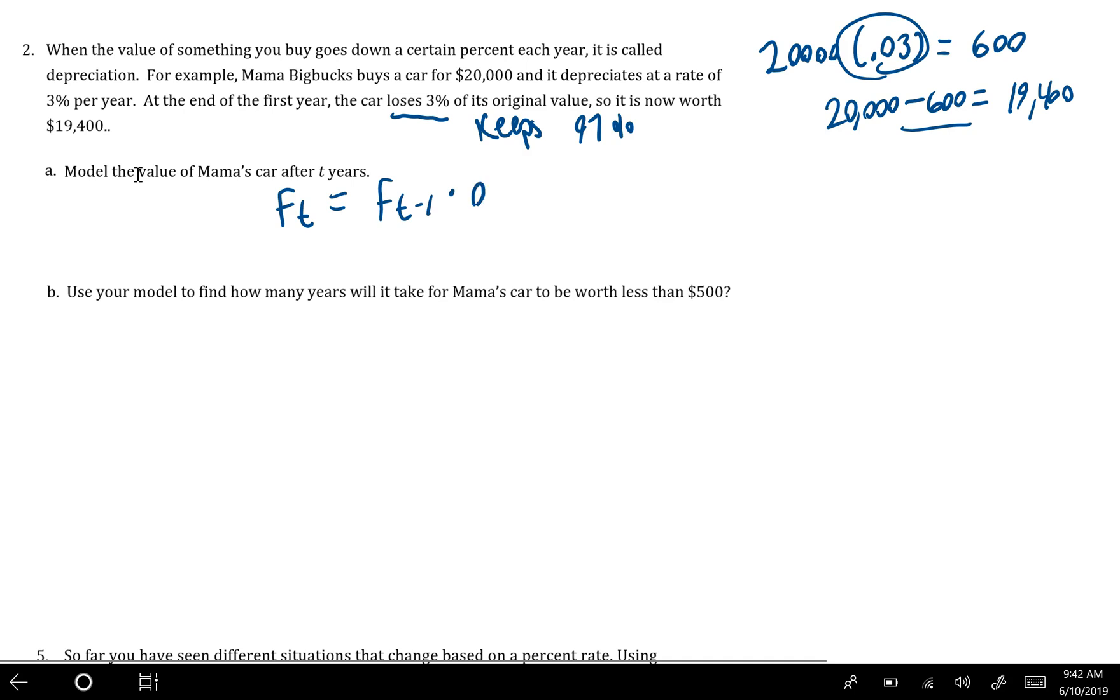So F(T) equals F(T) minus one times 0.97, F sub zero equals twenty thousand. So again, we want to write an explicit rule. So using what we've learned about geometric sequences and exponential functions, we have our starting amount multiplied by the common ratio raised to the power of T.